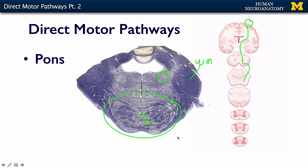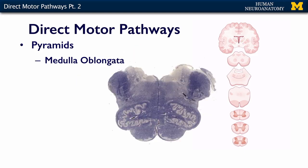So back to our motor pathways. It started in the motor cortex, traveled through the internal capsule, went through the crus cerebri, and now in the pons it's interspersed with clusters of different neurons.